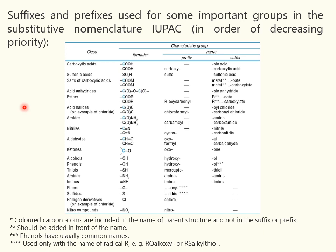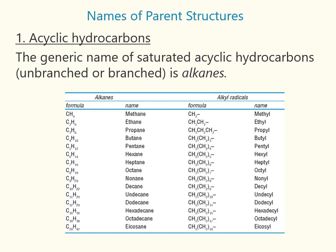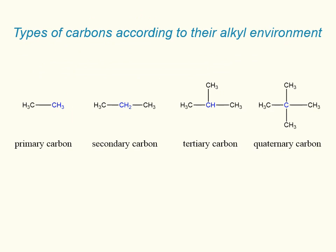Multiplying affixes and locants are added as necessary. The generic name of saturated acyclic hydrocarbons is alkanes. Examples are given in the table — the names of the alkanes should be remembered. The prefixes sec (secondary) and tert (tertiary) refer to the degree of alkyl substitution at a carbon atom. There are four types of carbons that differ in their alkyl environment.